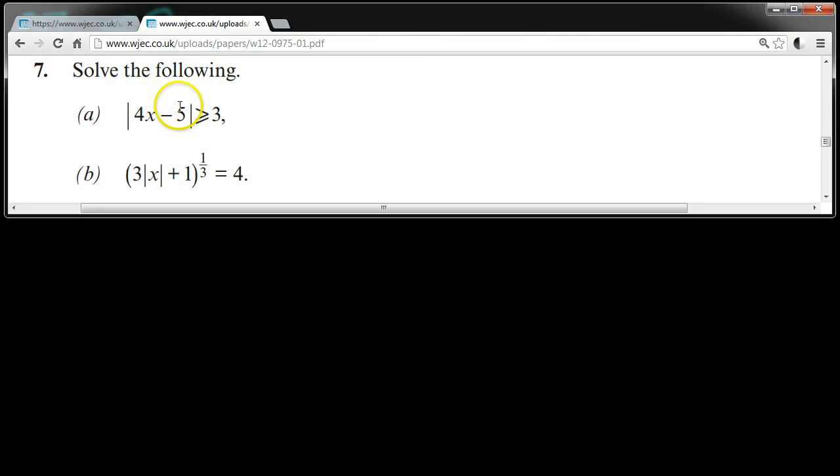Solve the following. The modulus of 4x minus 5 is bigger than or equal to 3. And 3 modulus of x plus 1 all to the power of 3rd equals 4.